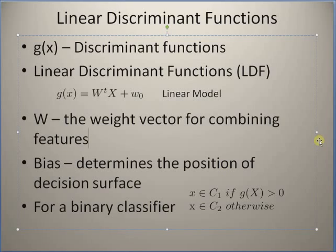Linear discriminant functions are usually represented by the symbol g(x), where x is the sample vector. A linear discriminant function has two components: the first is the product of the weight vector with the feature vector, and the second component is the bias.